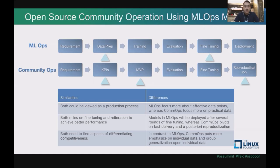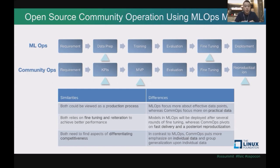For a typical machine learning operation pipeline, you gather the requirements, then do the preparation for data, perform training, do evaluations, see the result, and then do a couple of rounds of fine-tuning until the result is very satisfactory, and then you deploy your model. This is a typical pipeline for ML Ops. The community operation, or what we call ComOps, uses a very similar pipeline.